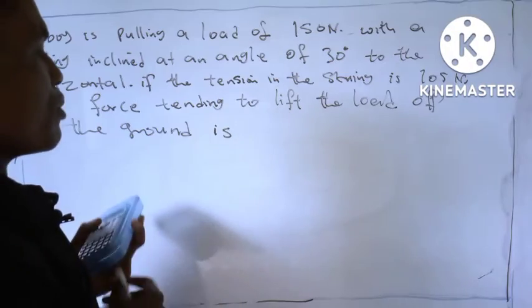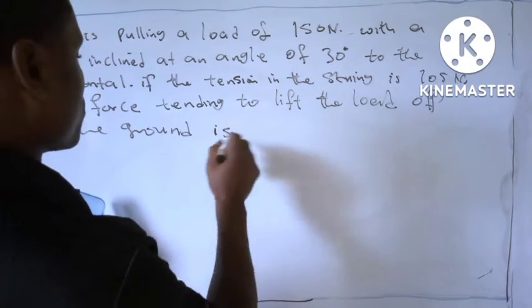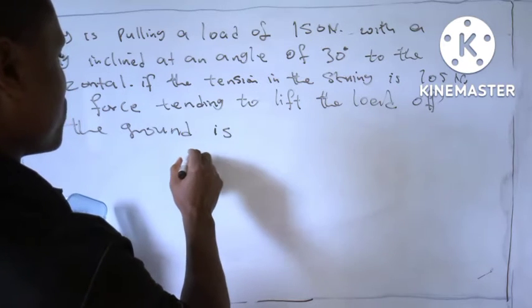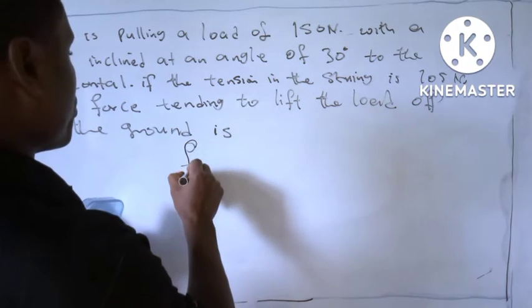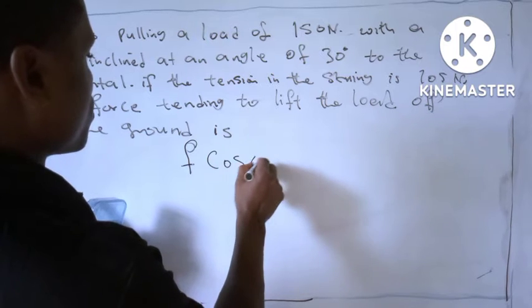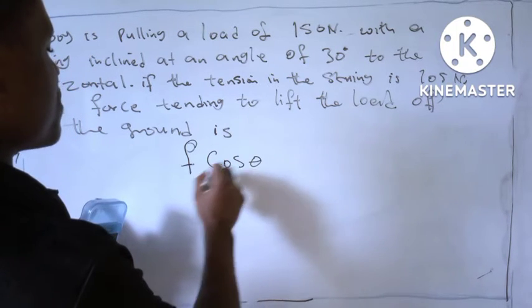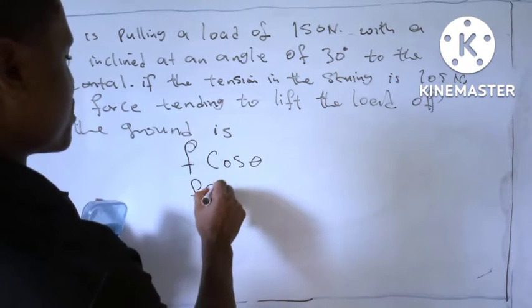And in my previous video, I told you that if I want to calculate the equation like this, if it's horizontal, you will use F cos theta. But if it's vertical, you use F sine theta.